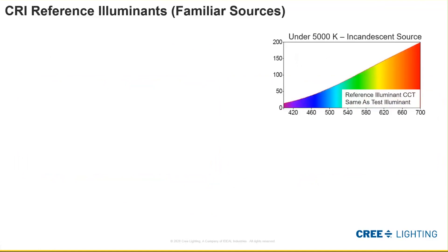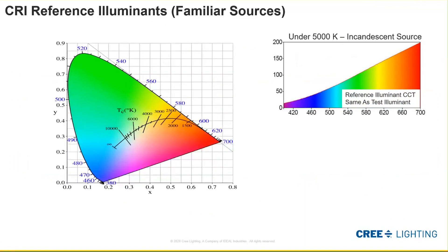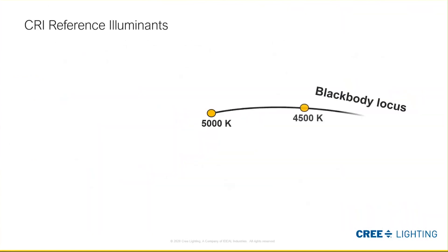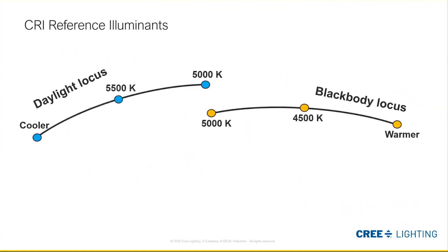For testing CRI under 5,000 Kelvin, we use an incandescent source matched to the CCT of the source being tested, which plots on the black body locus. For 5,000 Kelvin and above, we use the daylight illuminant, which plots just above the black body locus. There is a bit of a disconnect or gap between these two, and we'll talk about how TM30 fixes that.